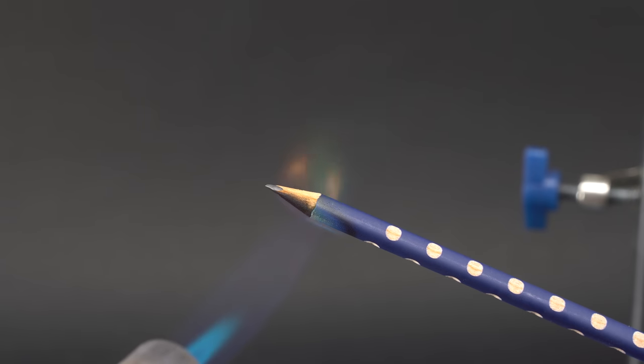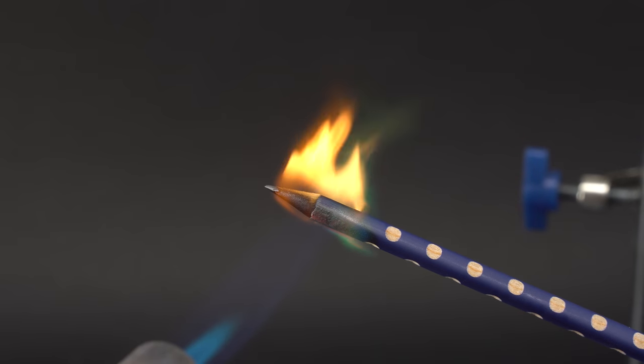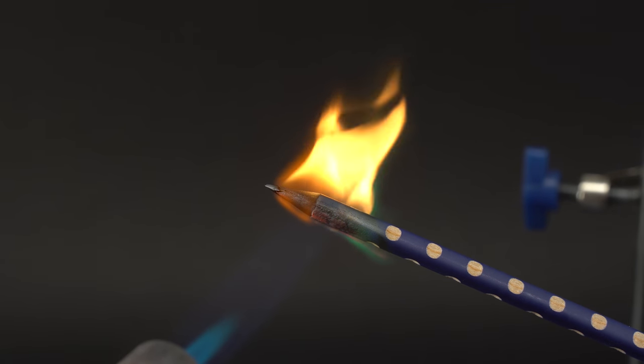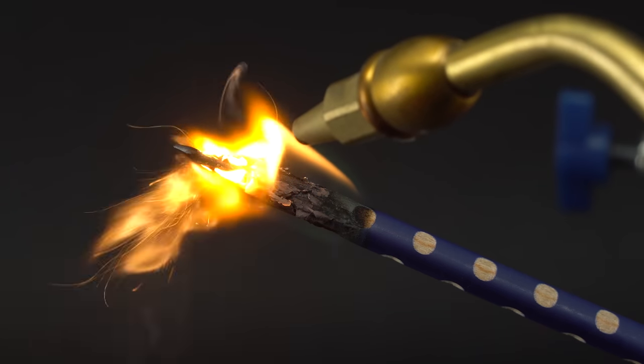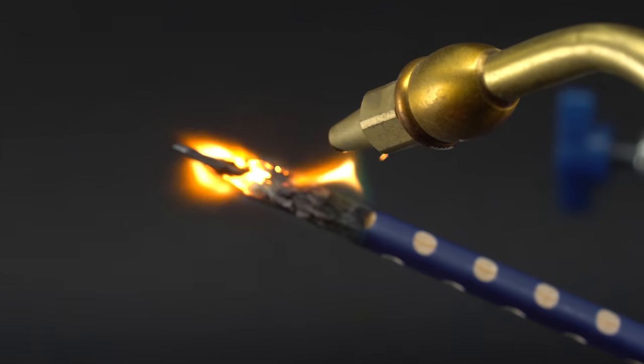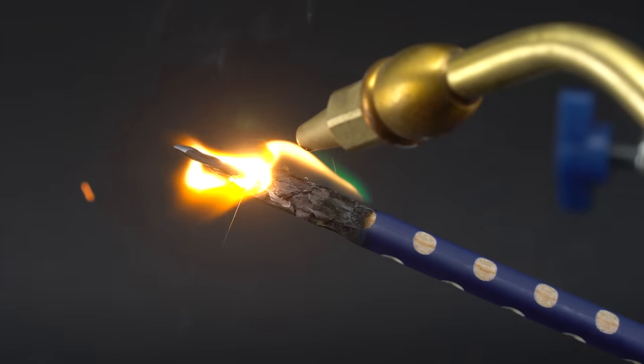For instance, if you try to burn a regular pencil in pure oxygen, then wood will burn well, just as it's supposed to. And the only thing that will be left after burning the pencil is graphite lead, which burns very poorly even in the stream of pure oxygen.